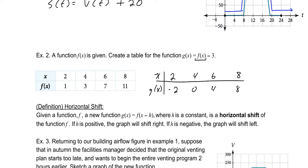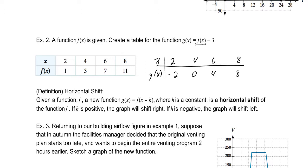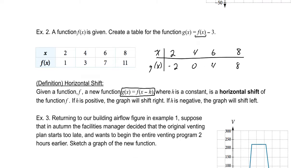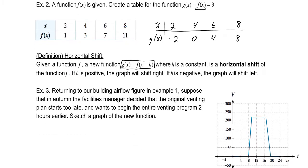The next type of transformation is the horizontal shift. Notice that g of x equals f of x minus h — what's changed is not the output, it's the input. The h value is a constant representing the horizontal shift. If h is positive, the graph shifts right; if negative, the graph shifts left. This one tends to go opposite of what you might think.